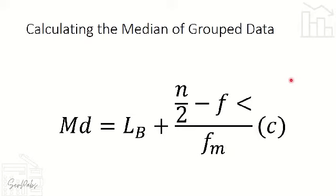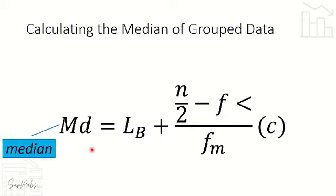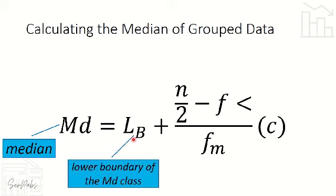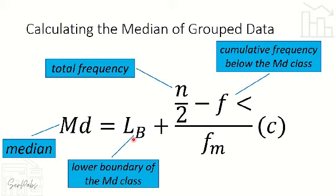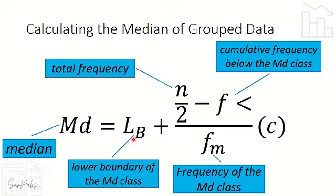Before the actual computation, let's define each variable. MD is the median. L sub B is the lower boundary of the median class, determined by subtracting 0.5 from the lower limit. N is the total frequency. F less than is the cumulative frequency below the median class. F sub M is the frequency of the median class, and C is the class size.